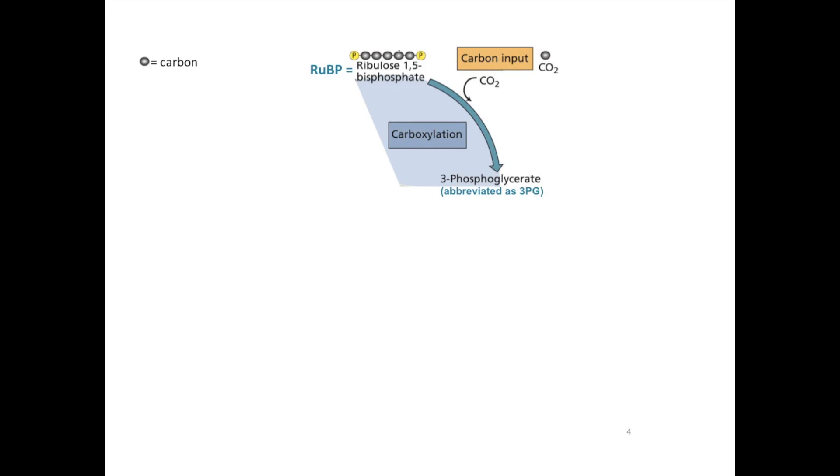Before we get into the phases, I want to point out that there is an emphasis on accounting for the number of carbons. So this symbol on the top left corner here represents a carbon. This is important to consider because in order to understand how many molecules of CO2 must be fixed to create sugar, we need to know how many carbons are coming in and what happens to them.